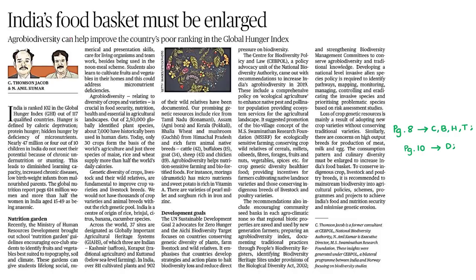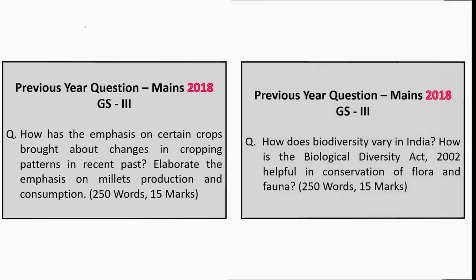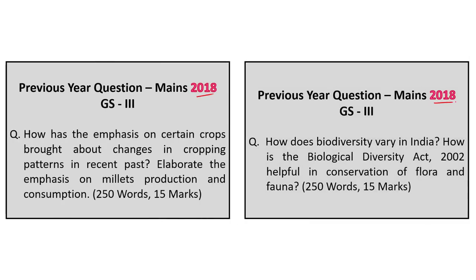First, let us see this editorial titled 'India's Food Basket Must Be Enlarged.' These are questions which appeared in 2018 mains General Studies Paper 3. One question asks how the emphasis on certain crops brought about changes in cropping patterns in the recent past — the essence of this being about the loss of agrobiodiversity. Another question directly asks how biodiversity varies in India, where agrobiodiversity is also a component.